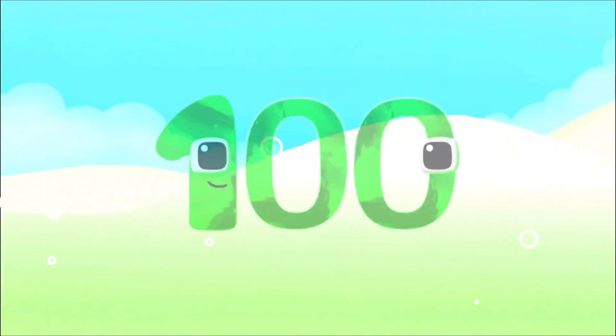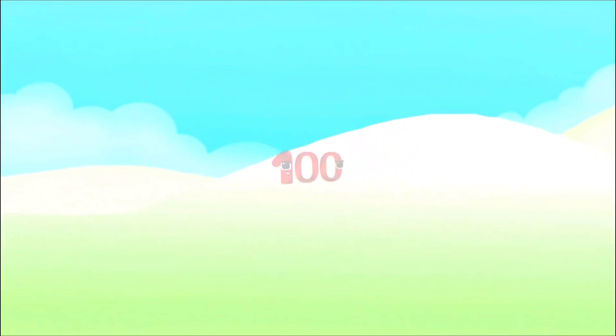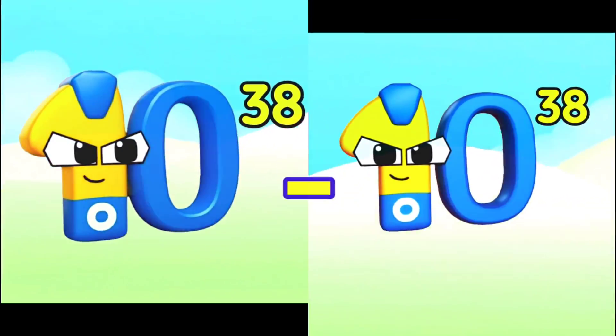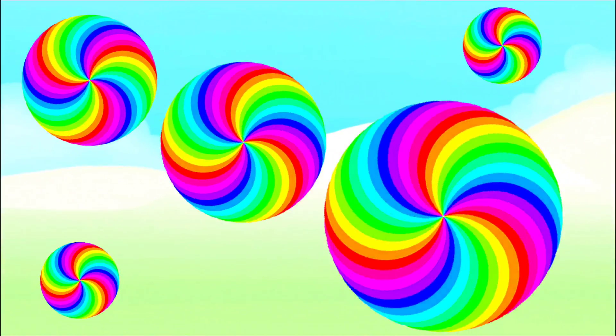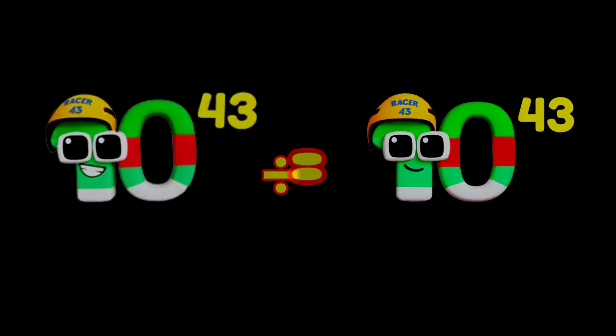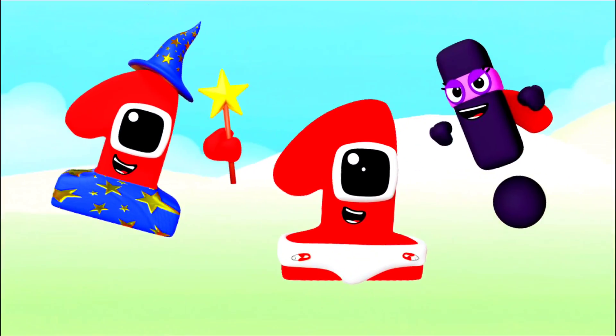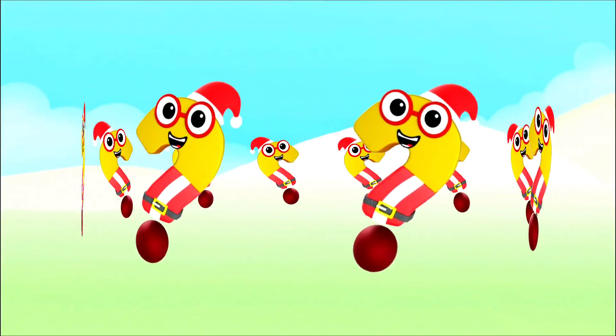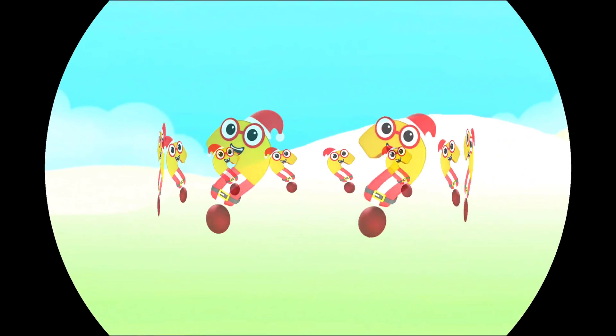100 undecillion minus 100 undecillion equals zero. 10 tradisillion divided by 10 tradisillion equals 1.